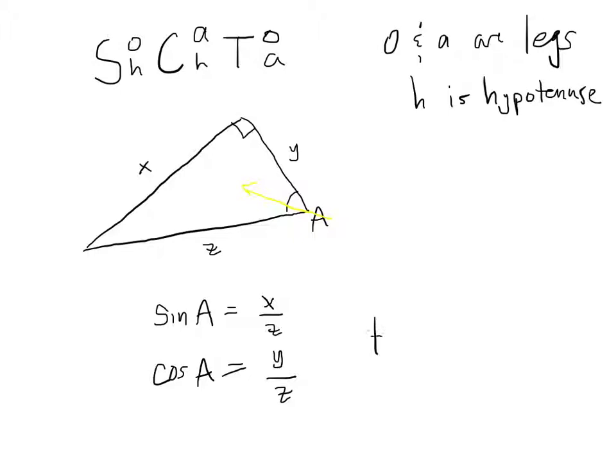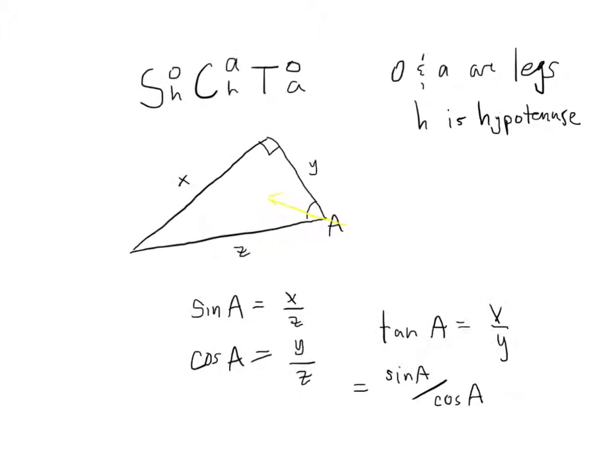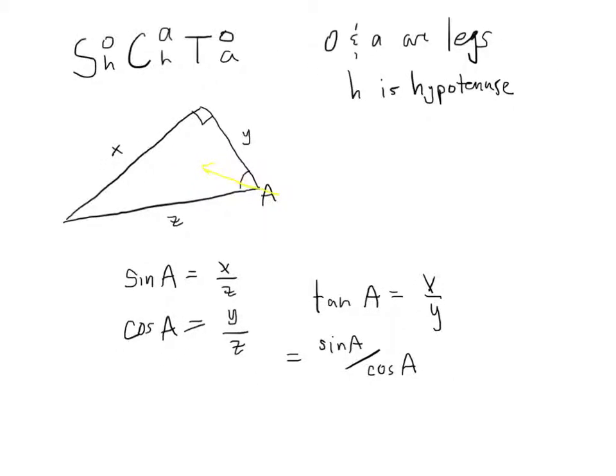And then finally, tangent of A is what? Opposite over adjacent, so X over Y. Okay. And notice that, have you read that tangent of A is sine of A over cosine of A? Okay, this is another fact that you may or may not have encountered. You didn't. So, let's go ahead and prove that to ourselves.